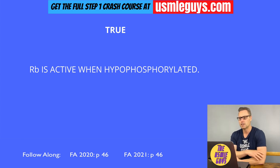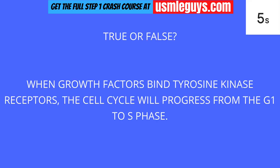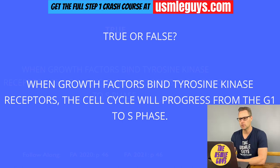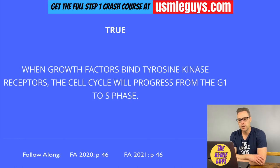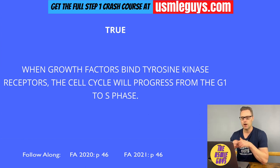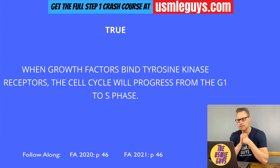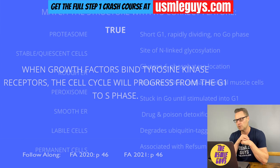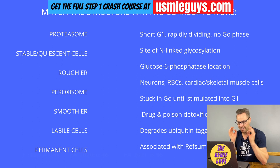Next question — this is true. When growth factors like insulin bind to tyrosine kinase receptors, it helps the cell cycle transition from the G1 phase into the S phase. Now let's do a matching exercise — a big one. Hit the pause button, figure everything out, and then come on back when you think you have the right answers.